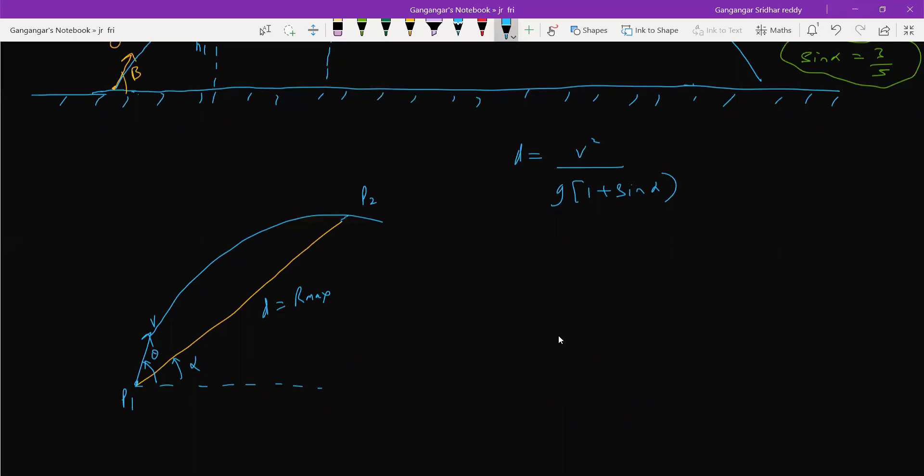Now we know value of d, we know alpha, we'll get the v. So d is equal to how much? The value d is 10. V square, g is how much? g is also 10. 1 plus sine alpha is what? 3 by 5. So this will be under 8, under 20. So v square is equal to 5, 8. So v square will be root of, so only 160 it is. V equal to root of 160, 160 meters per second.